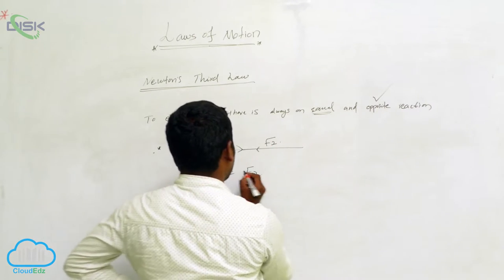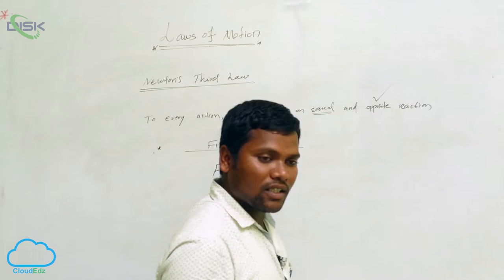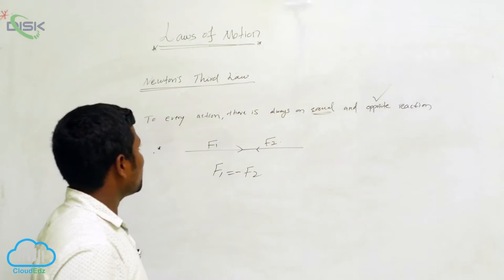What is the next one? Opposite. So what we can write? F1 is equal to minus F2. This tells about Newton's Third Law.